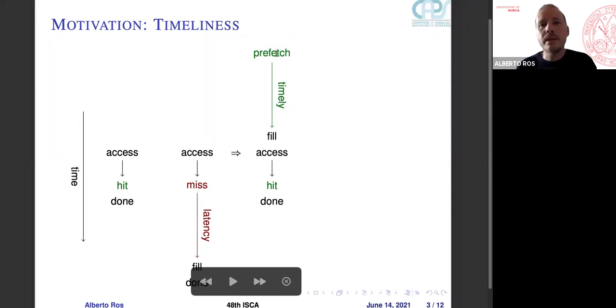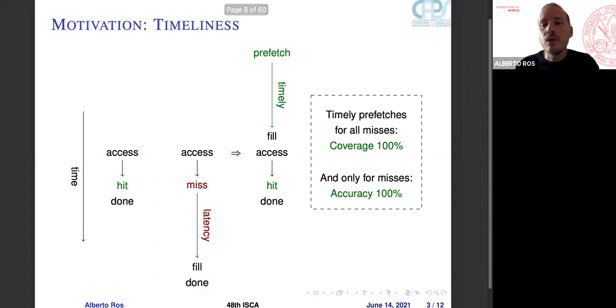If we issue the prefetch at this point, based on the latency that we compute, the cache line will be filled in the L1 instruction cache, and the access will become a hit. If we do this for all misses, we will have a coverage of 100%. And if we only do for misses, we have an accuracy of 100%, so no wasted traffic will be performed.